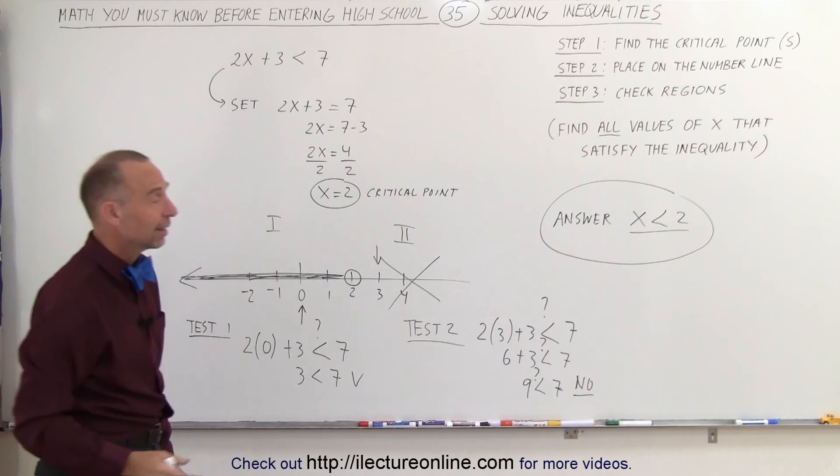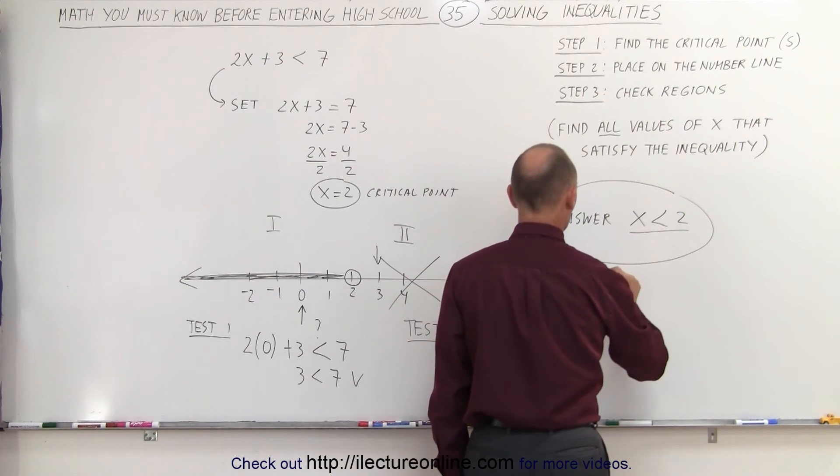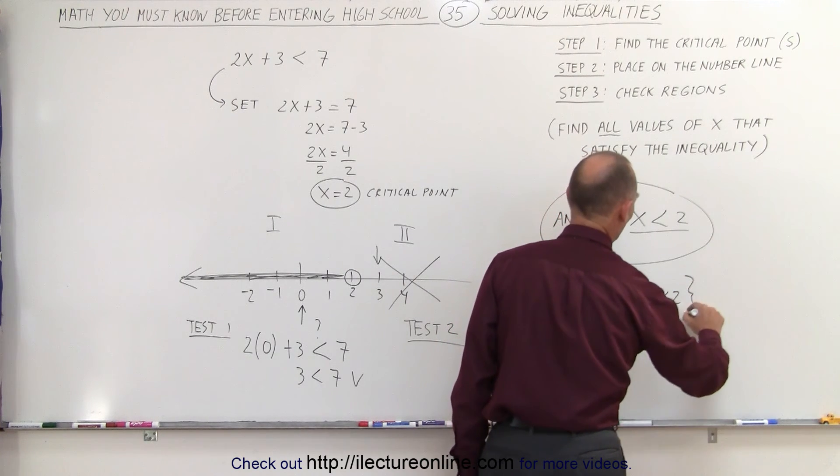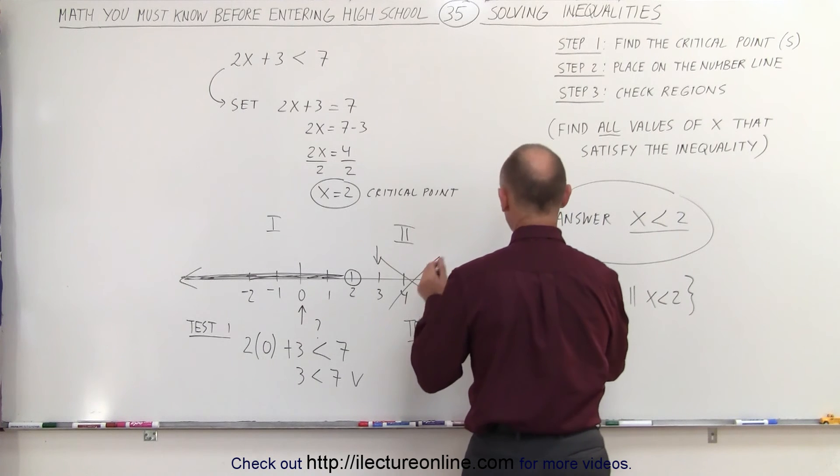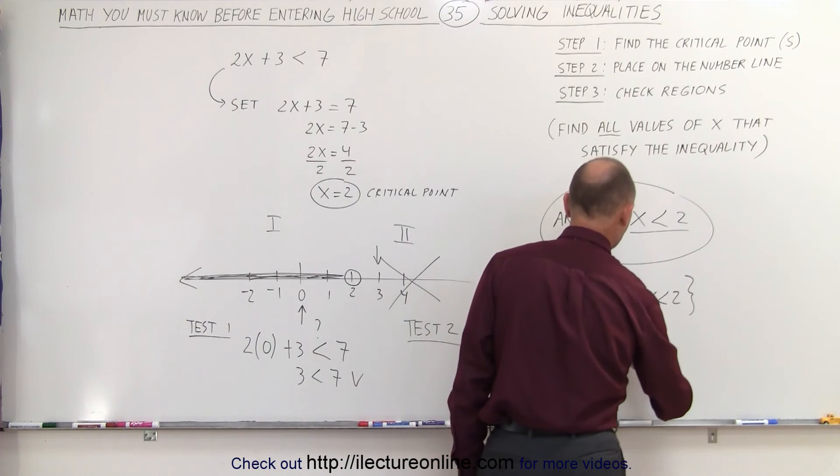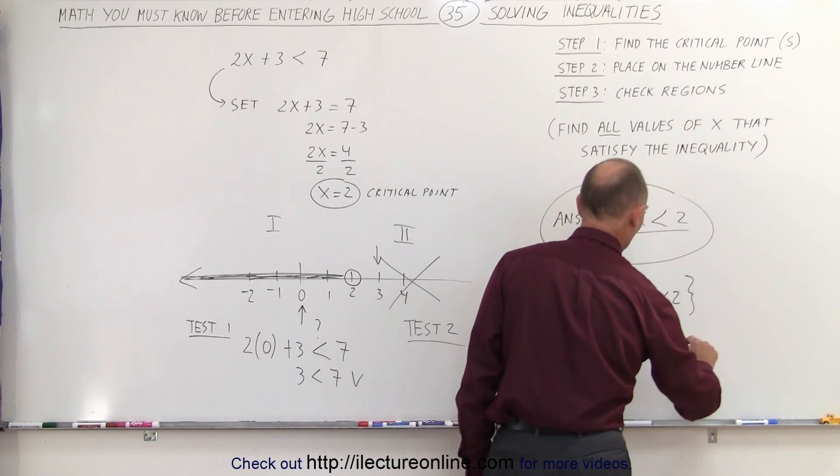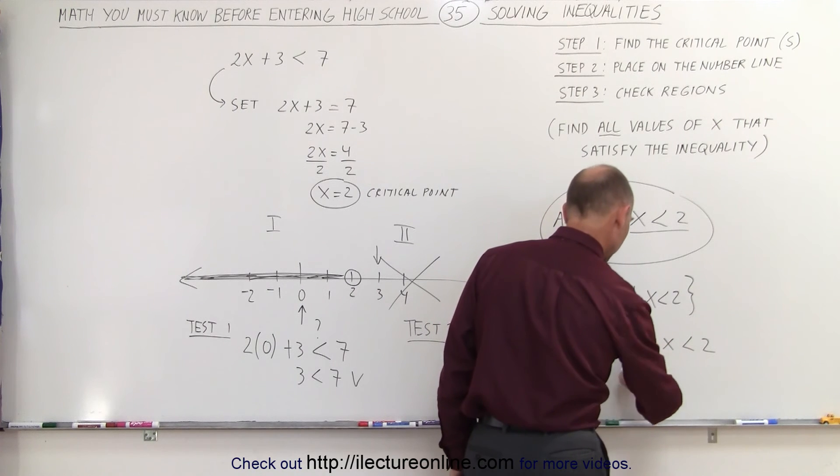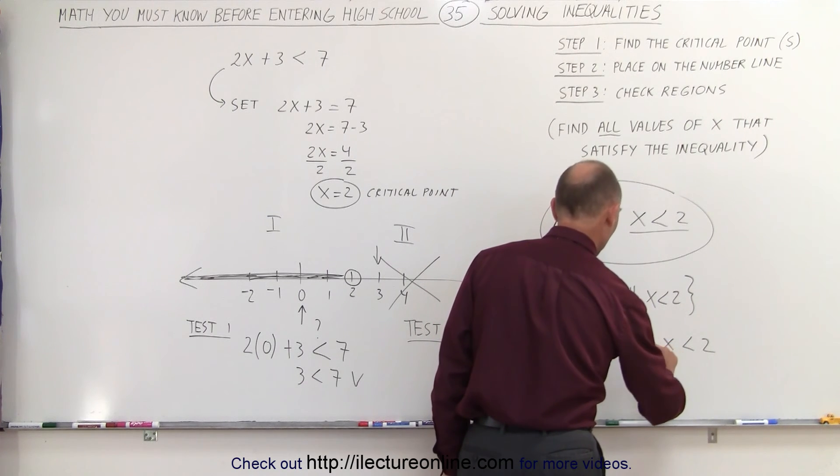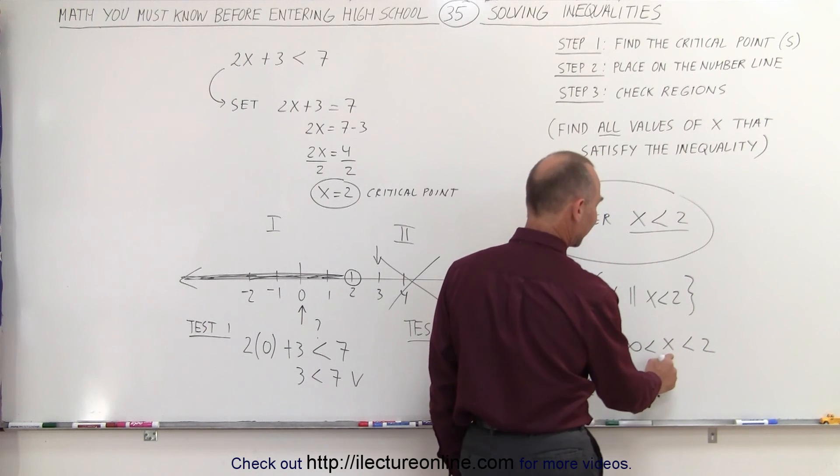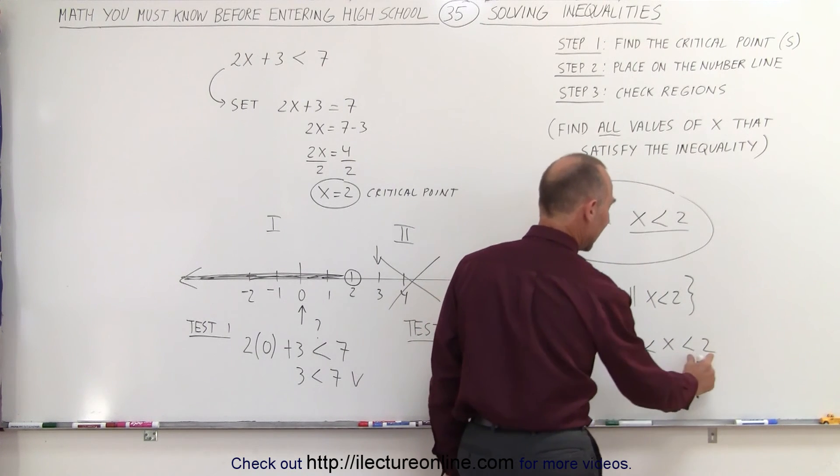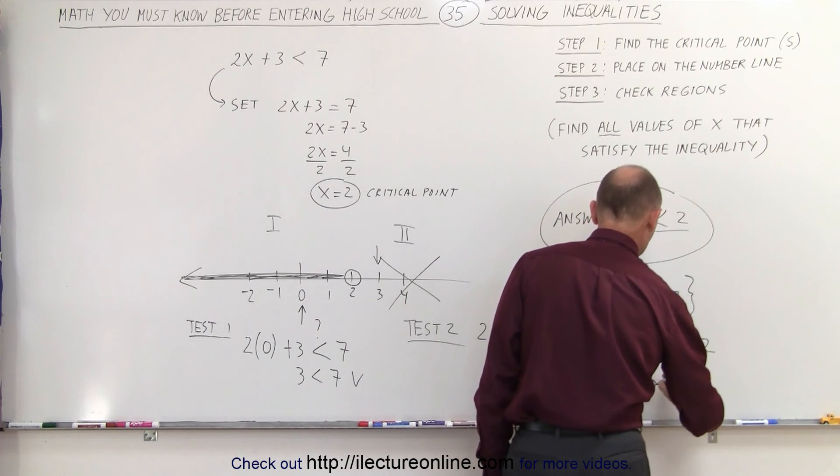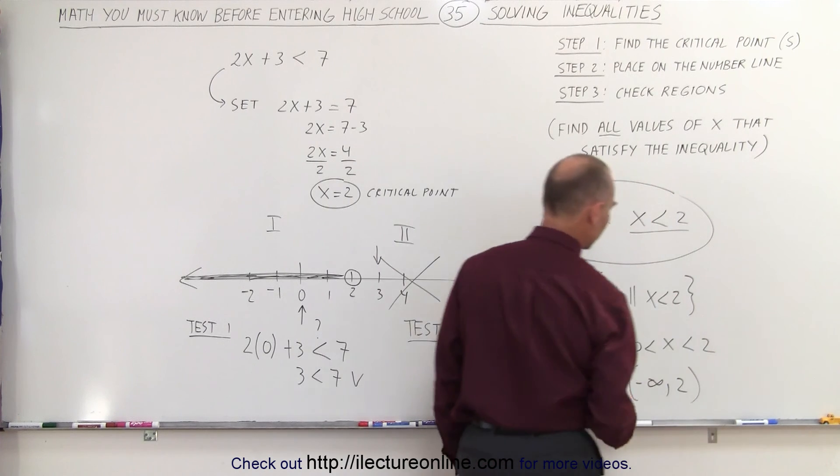Now there are different ways of writing that. In some cases you can say that the solution is all x's such that x is less than 2 or sometimes we write it as a region. Another way of writing that is to say that negative infinity is smaller than x which is smaller than the number 2. We don't put the include sign in there. I'm missing something here. So negative infinity is smaller than x smaller than 2.